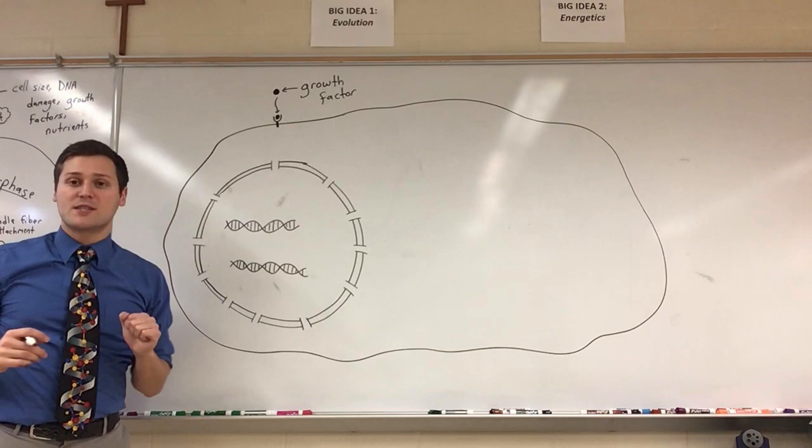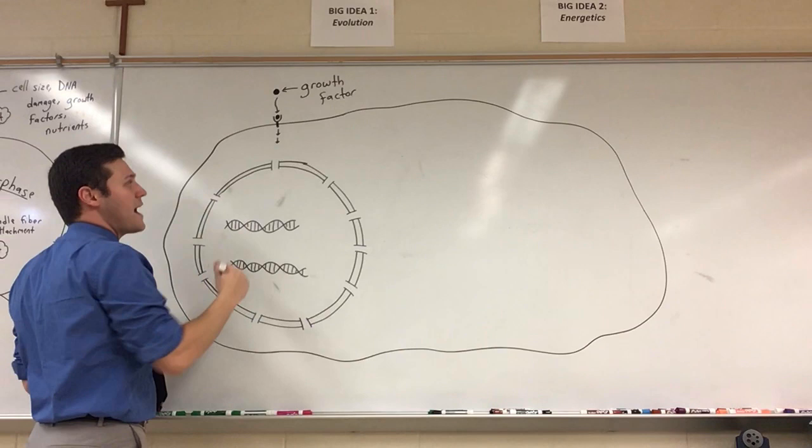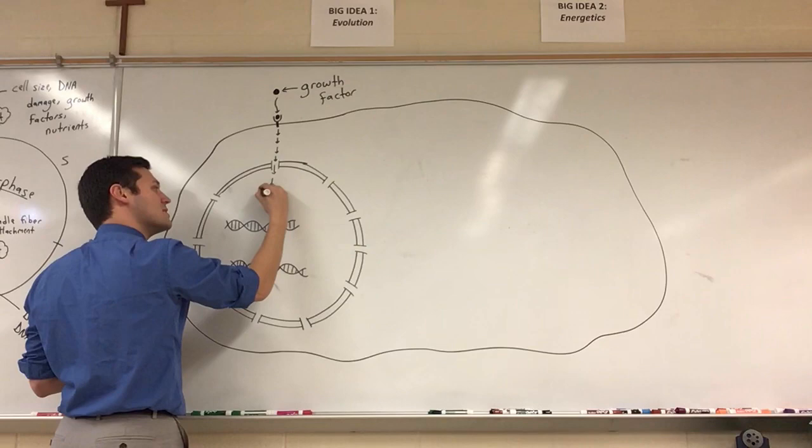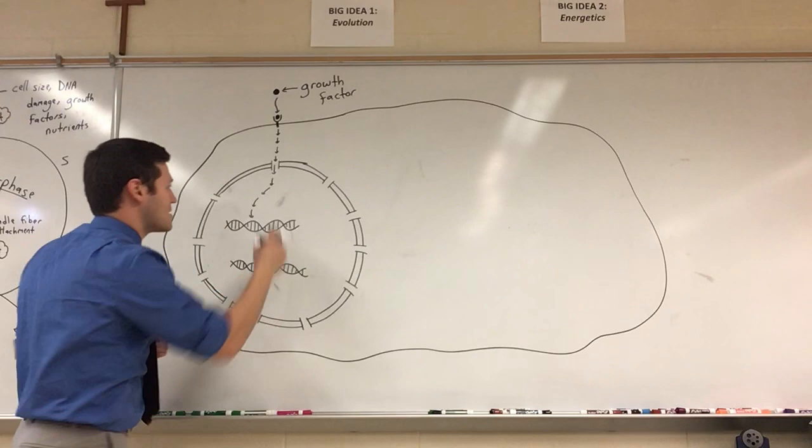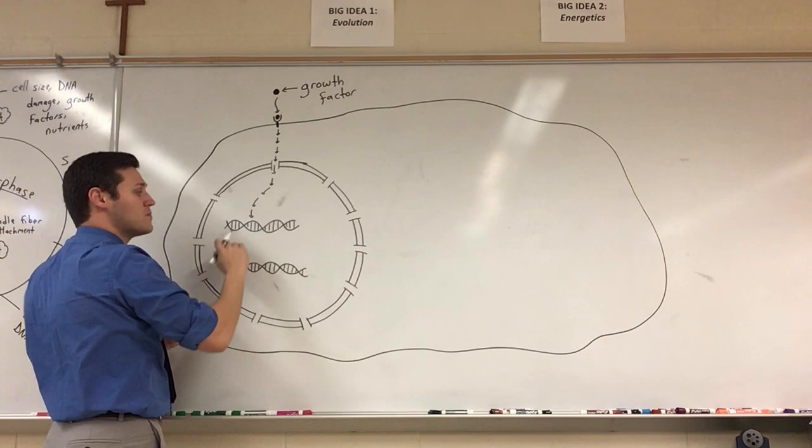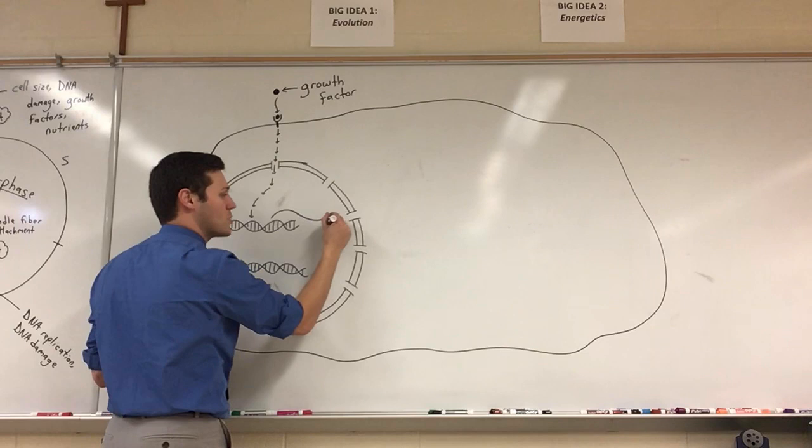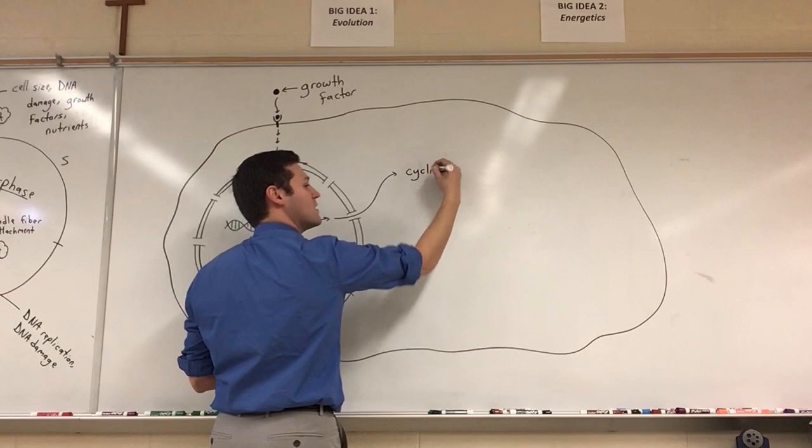the growth factor will bind to a receptor. That receptor will then initiate a signal transduction pathway, a protein cascade, which will ultimately lead to the expression of a particular protein. So the signal transduction pathway ultimately enters the nucleus. Once the DNA receive that signal, they will start expressing, through transcription and translation, this protein called a cyclin.